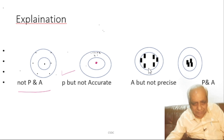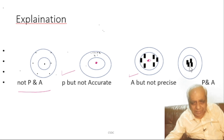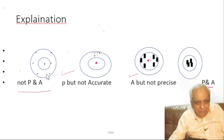In this case the center point is the target. He is around that center point, so he is accurate but not precise because the shots scatter in different directions. If you see the last figure, he is both precise and accurate — he has hit around the bull's eye within a small band. So this is called precise as well as accurate, whereas the first case was neither precise nor accurate.